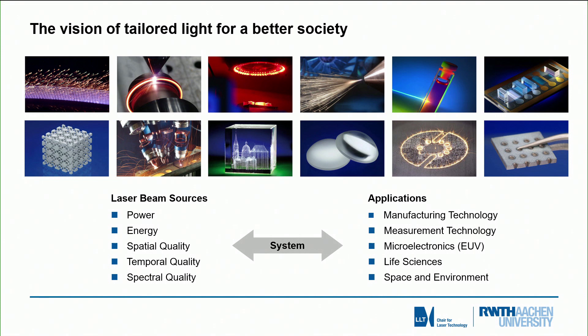As you see in this view graph, we can tailor the light in terms of power, energy, spatial quality — that is focus ability — temporal quality, pulse durations, pulse repetition rates, frequencies, and last but not least spectral quality, standing for the individual wavelengths that we can use in building corresponding lasers.